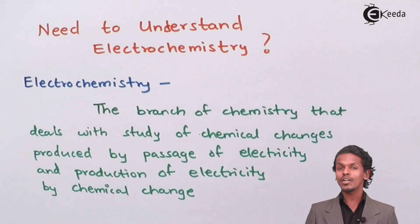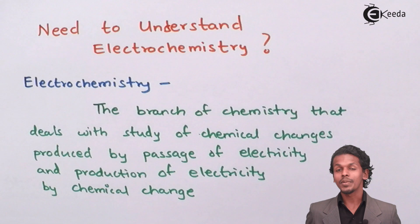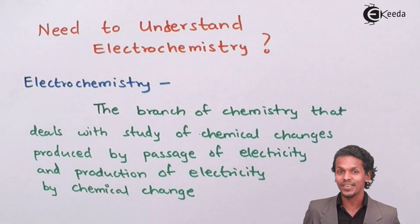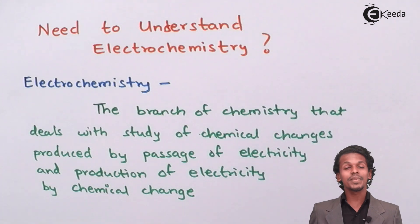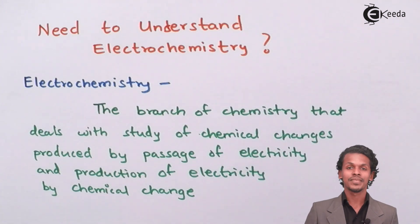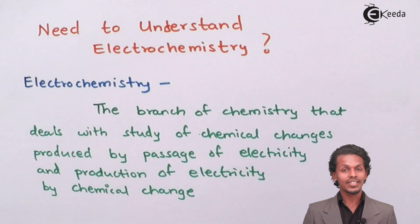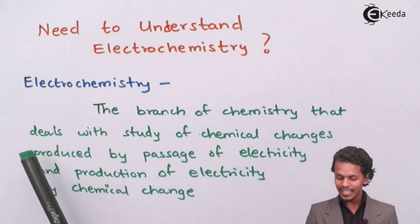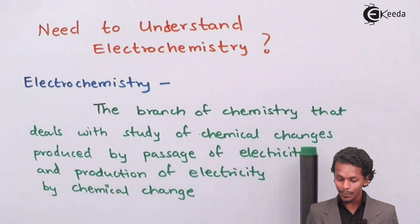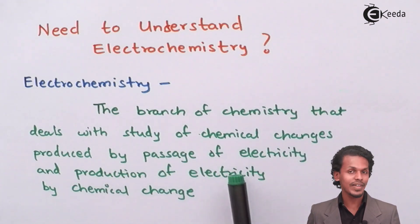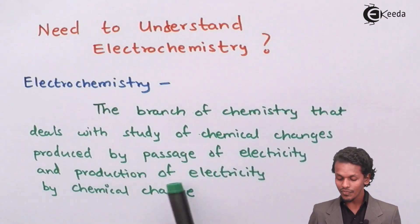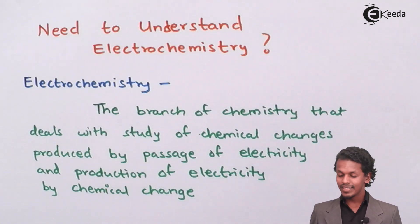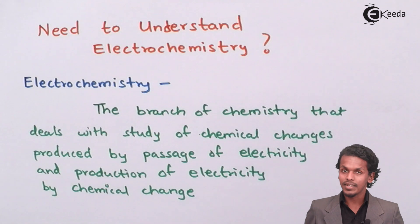As the name suggests, electrochemistry means something which is related to electricity and something which is related to chemical reaction. So electrochemistry is the combination of both. It is the branch of chemistry that deals with the study of chemical changes produced by the passage of electricity, and the production of electricity by chemical change. So there are two kinds of reactions explained in electrochemistry.